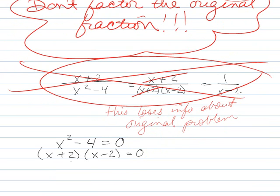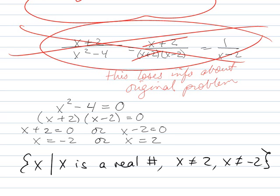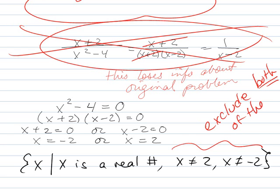So x+2, x-2, so x+2 is 0 or x-2 is 0. So x equals negative 2, x equals positive 2. So in this case, x such that x is a real number, and x is not equal to 2, and x is not equal to negative 2. So we want to exclude both of these, which we wouldn't have done if we'd factored out the original problem. So I guess that's the only real trick about doing this, is not to exclude something, or to forget to exclude something that you really do need to exclude.